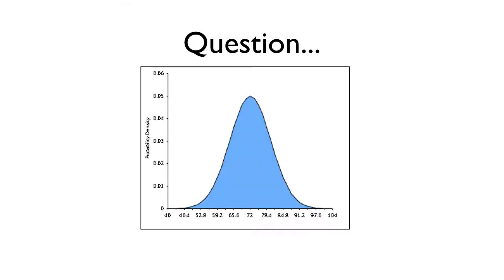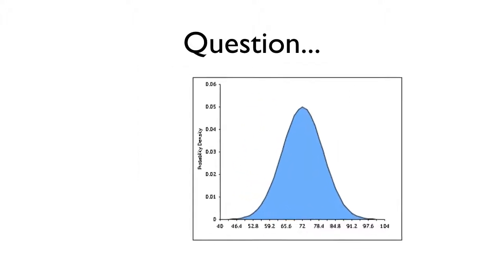So here's a distribution, a hypothetical distribution. This has a mean of 72 and a standard deviation of 8.